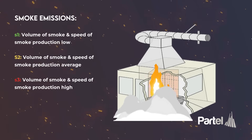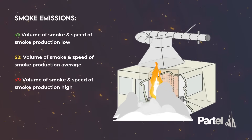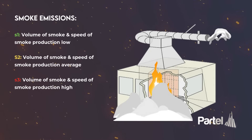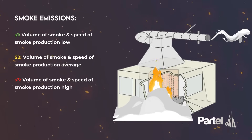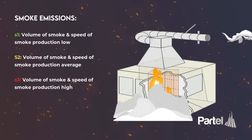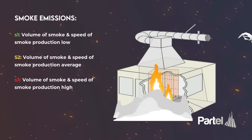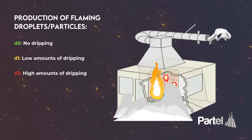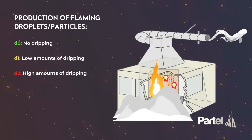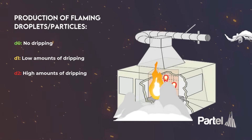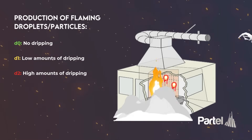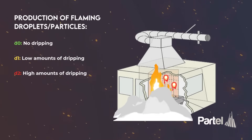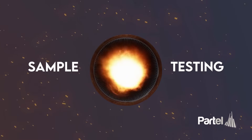The subcategory of smoke emissions is defined by the volume and speed of smoke production, classified as s1 (low), s2 (average), and s3 (high). The subcategory of flaming droplets or particles is defined by the amount of drops, classified as d0 (no flaming droplets) to d2 (high amounts of flaming droplets).